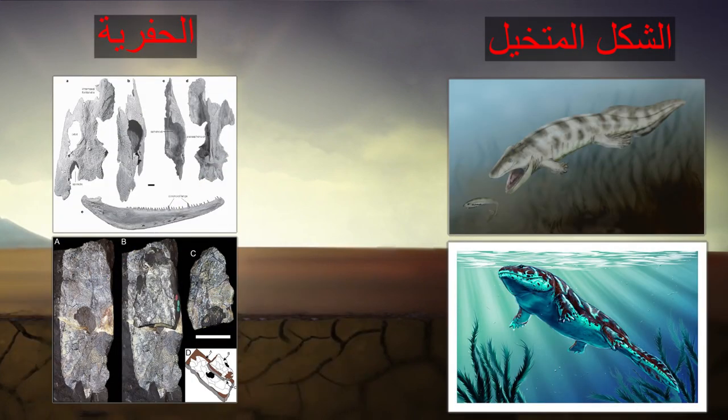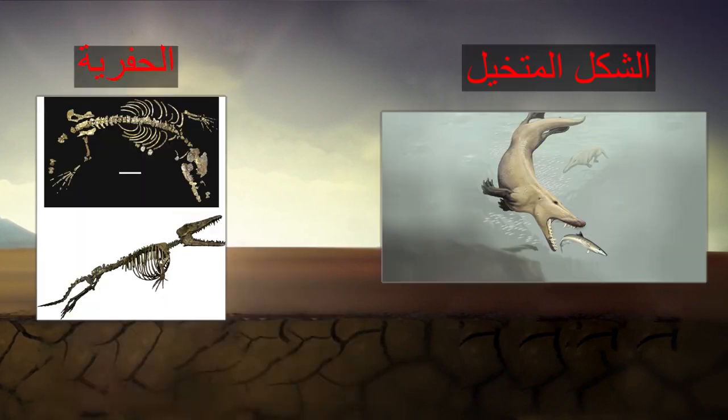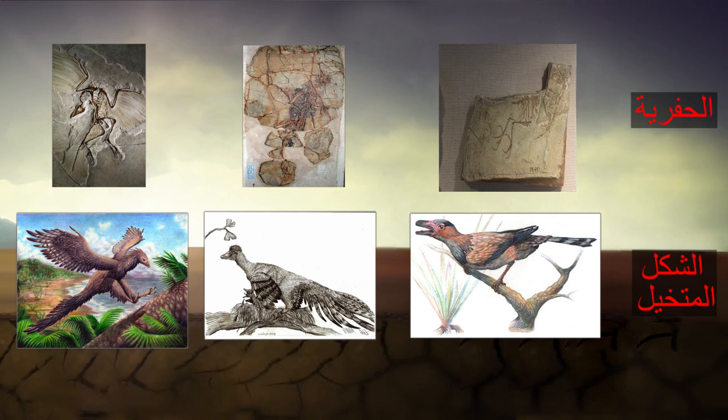أما السجل الأحفوري فيقدم أمثلة على أجداد وأسلاف مشتركة تملأ أحافيرها المتاحف الطبيعية في أرجاء العالم، وتُنشر حولها رُزم من الدراسات العلمية. فعلى سبيل المثال، بين الأسماك ورباعيات الأقدام لدينا التكتاليك وغيره، وبين رباعيات الأقدام البدائية والحيتان مثل الحوت الجوال، وبين الديناصورات والطيور لدينا الأركيوبتريكس، وبين الإنسان وشبيهاته من القردة العليا لدينا الأسترالوبيثيكوس.